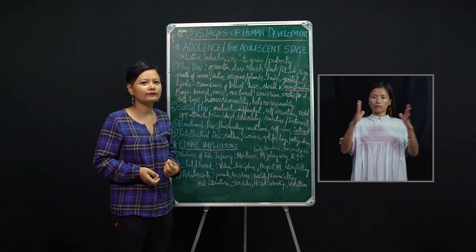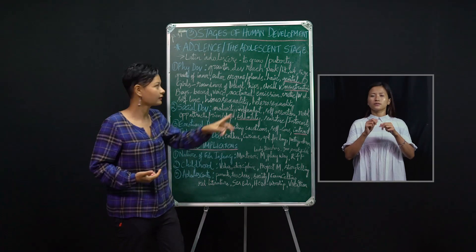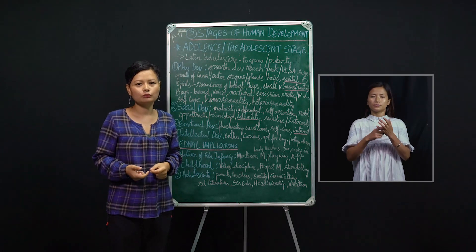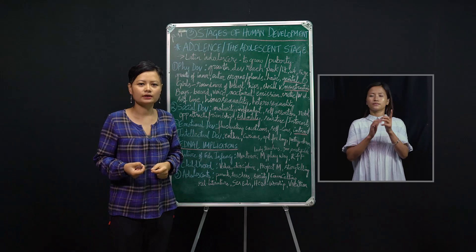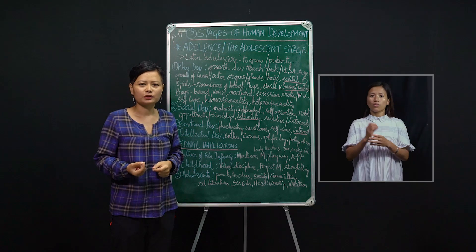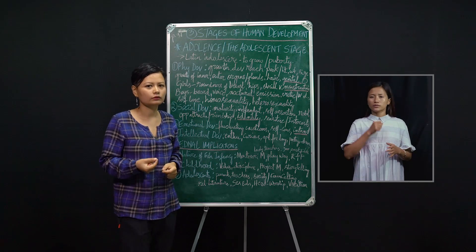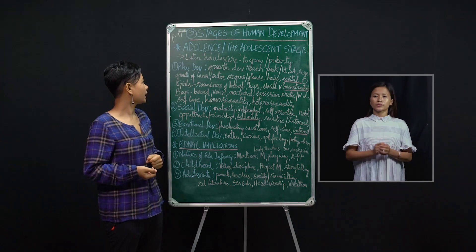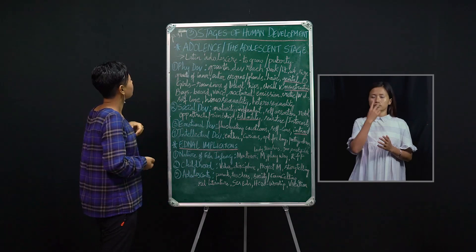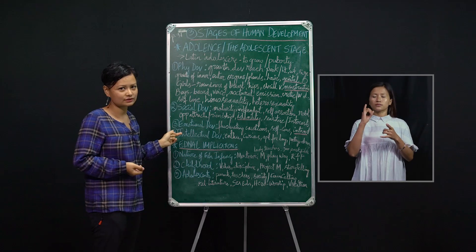Another very significant feature of the adolescence stage is puberty. Puberty means the development of the sexual organs and development of maturity — you reach the age of maturity. And here in this stage we also have to look into the physical, social, emotional, and intellectual development of the adolescent.